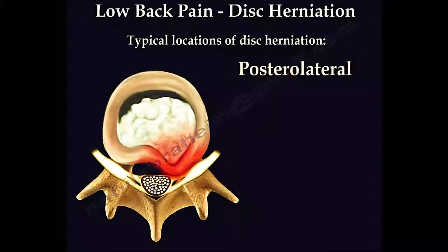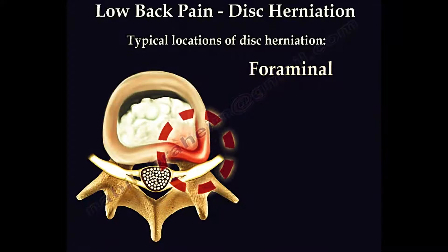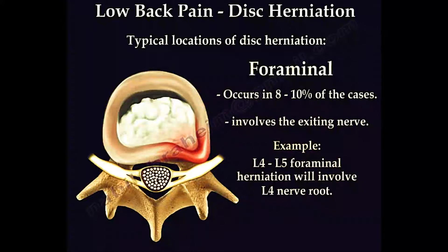The second location is posterolateral, which is the most common location. It involves one nerve root, the lower one — for example, an L4-L5 herniation will involve the L5 nerve root. The third location is foraminal, occurring in about 8 to 10% of all cases. It involves the exiting nerve — for example, an L4-L5 foraminal herniation will involve the L4 nerve root.